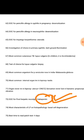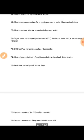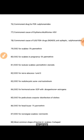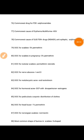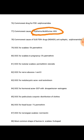Drug of choice for post-herpetic neuralgia is gabapentin. Most characteristic feature of lichen planus on histopathology is basal cell degeneration. Best time to read a patch test is four days. Commonest drug for fixed drug eruption (FDE) is sulfonamides.